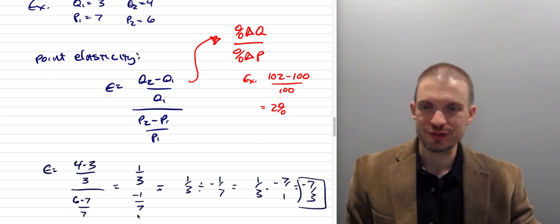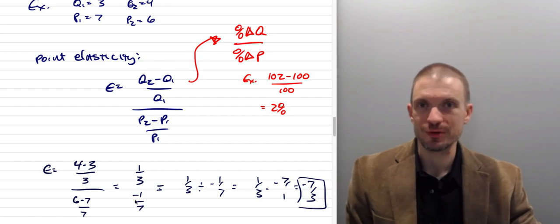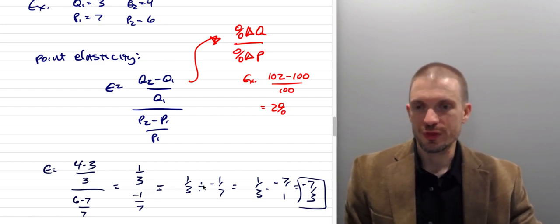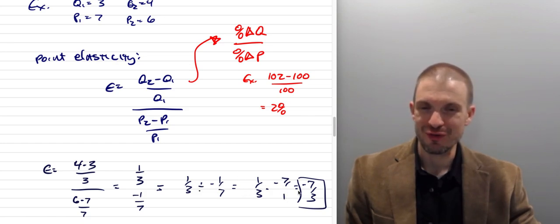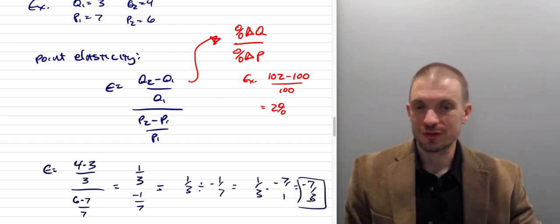So I have 1 third divided by minus 1 seventh, right? Law of demand tells us that price and quantity move in opposite directions. I'm going to get a negative sign here. So I'm going to have 1 third divided by minus 1 seventh, or 1 third times minus 7 over 1, or minus 7 thirds. Minus 7 divided by 3.